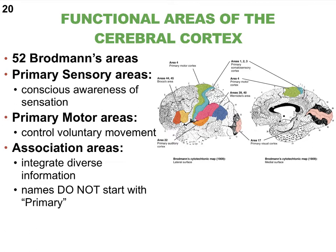Despite the fact that I'll point to an area and say these are the major functions, most often that area will still get help from other areas in the brain and sometimes even from the other side. Back in the early 1900s, a man named Brodmann came up with 52 functional areas of the brain, which led us to recognizing three major functional areas: primary sensory areas, primary motor areas, and association areas.